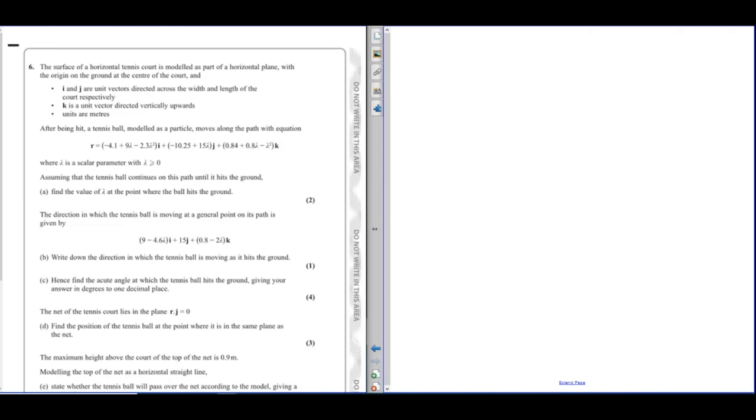This is question 6 from the Edexcel AS Further Maths Core 1 2022 paper, and it's a vectors question. So this gives us an equation for the path of a tennis ball. It's got some lambda squares in there, but it's just given us that.